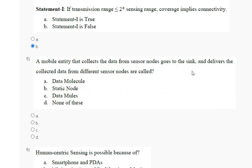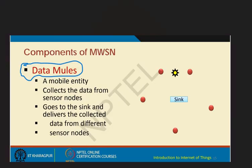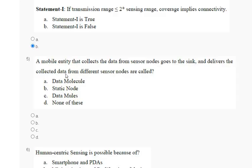Question five: a mobile entity that collects data from sensor nodes, goes to the sink, and delivers the collected data from different sensor nodes is called — options are: data molecule; static node; data mules; none of these. The explanation: data mules is a mobile entity that collects data from sensor nodes, goes to the sink, and delivers the collected data. The correct answer for question five is option C.